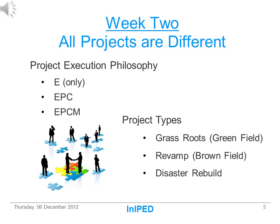Week 2: All projects are different, and it is important to know and understand the project. This is the time to look at the variations in how projects are executed. Project execution includes engineering only, engineering procurement and construction (EPC), and engineering procurement and construction management (EPCM). These are just the major variations in execution, but the PEL needs to know and understand them. We will also look at the different types of projects, including grass roots, revamp, or disaster rebuild, and why differences in requirements and execution methods apply to each.